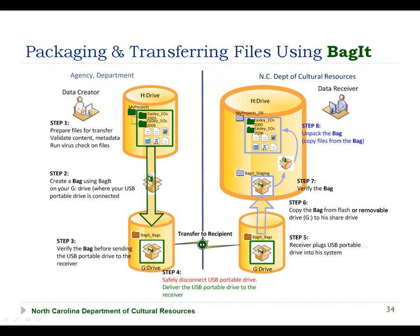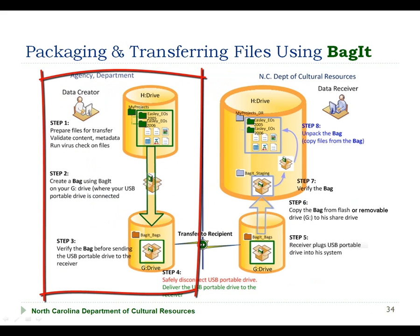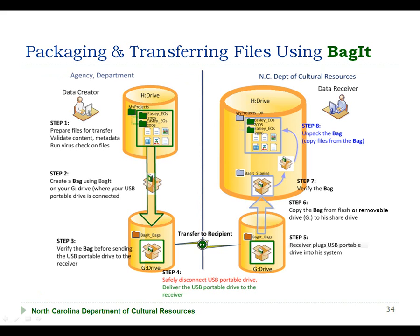As we review the sequence of steps required to create a bag, we are going to focus on steps illustrated on the left side of our process flow diagram. In our demonstration, the data creator is going to create a bag on a USB-attached removable disk drive connected to the G drive. Alternatively, the bag could be created and transferred via a USB-attached flash drive — in that case, you would likely see the flash drive connected to the E drive — or the bag could be created on a network-attached shared drive denoted by some other letter.